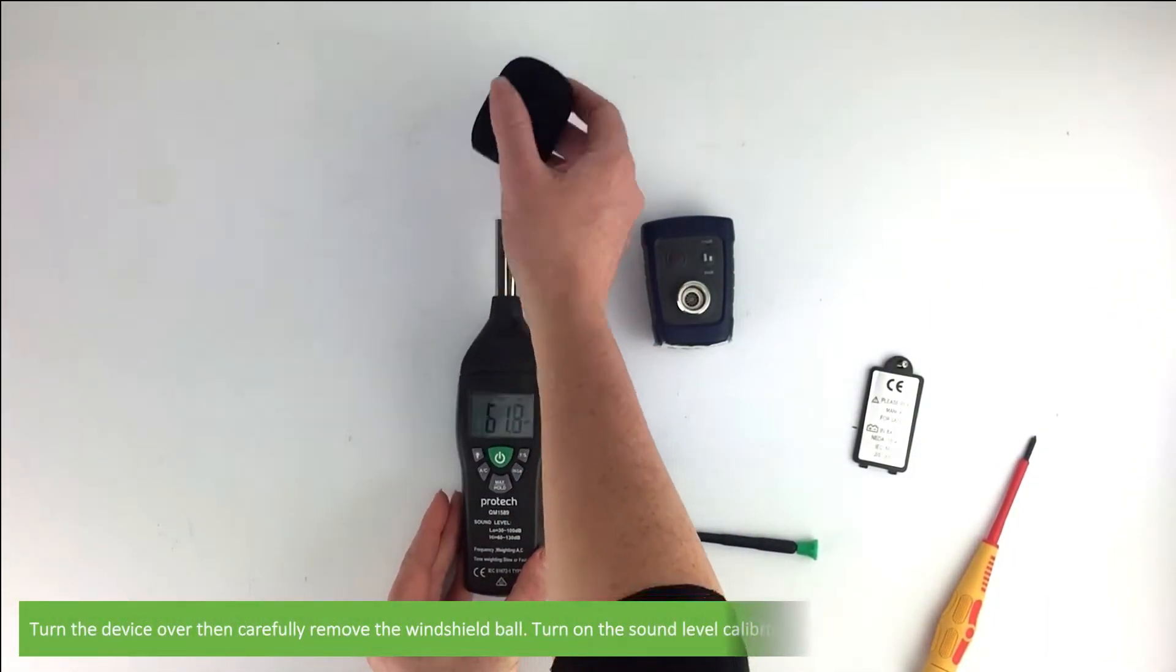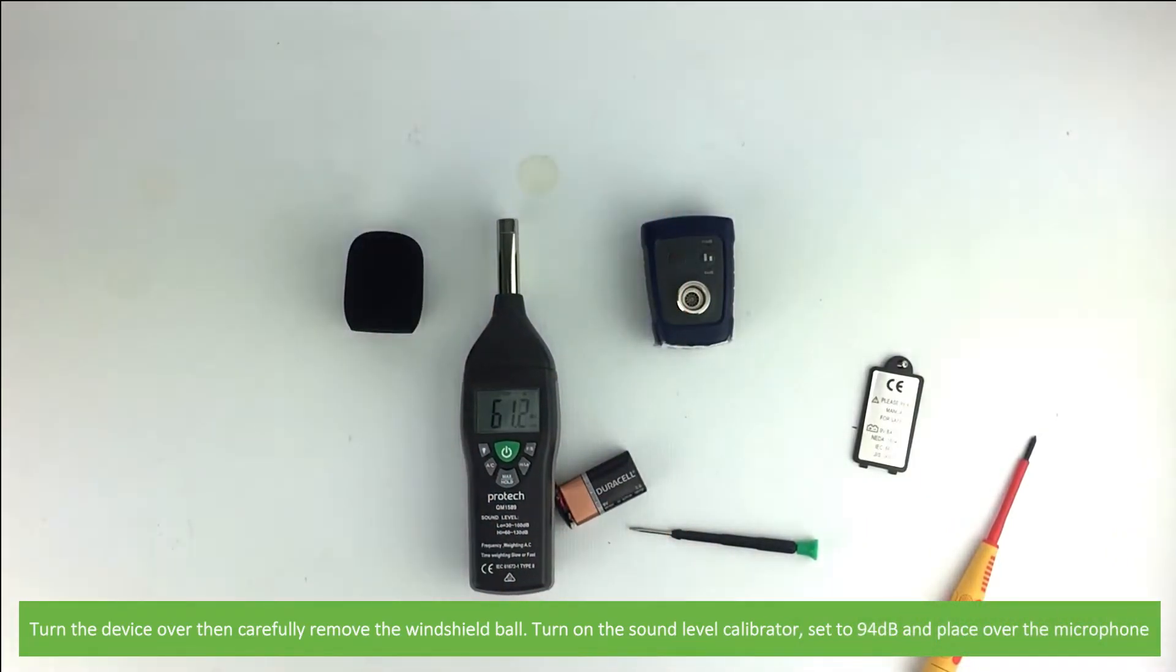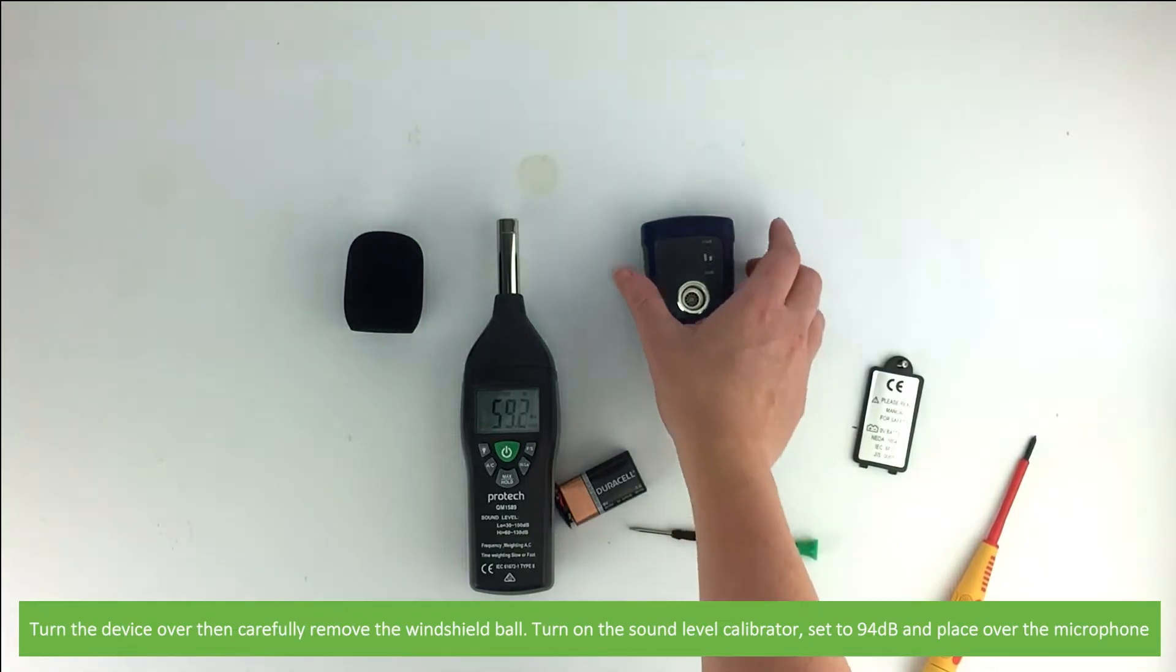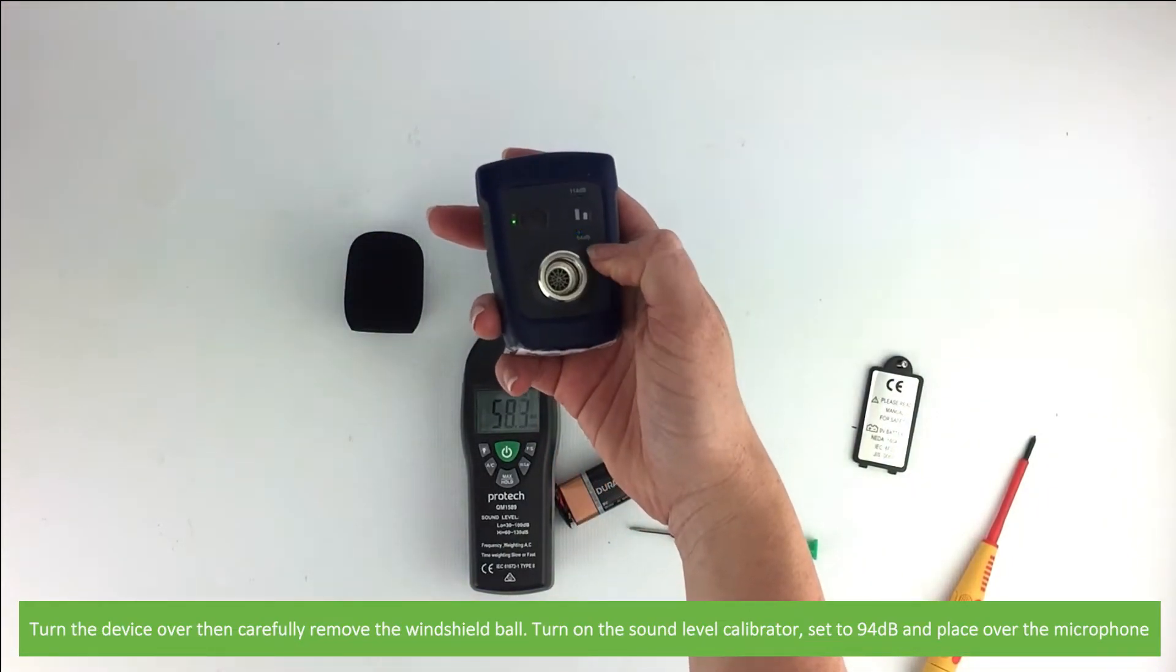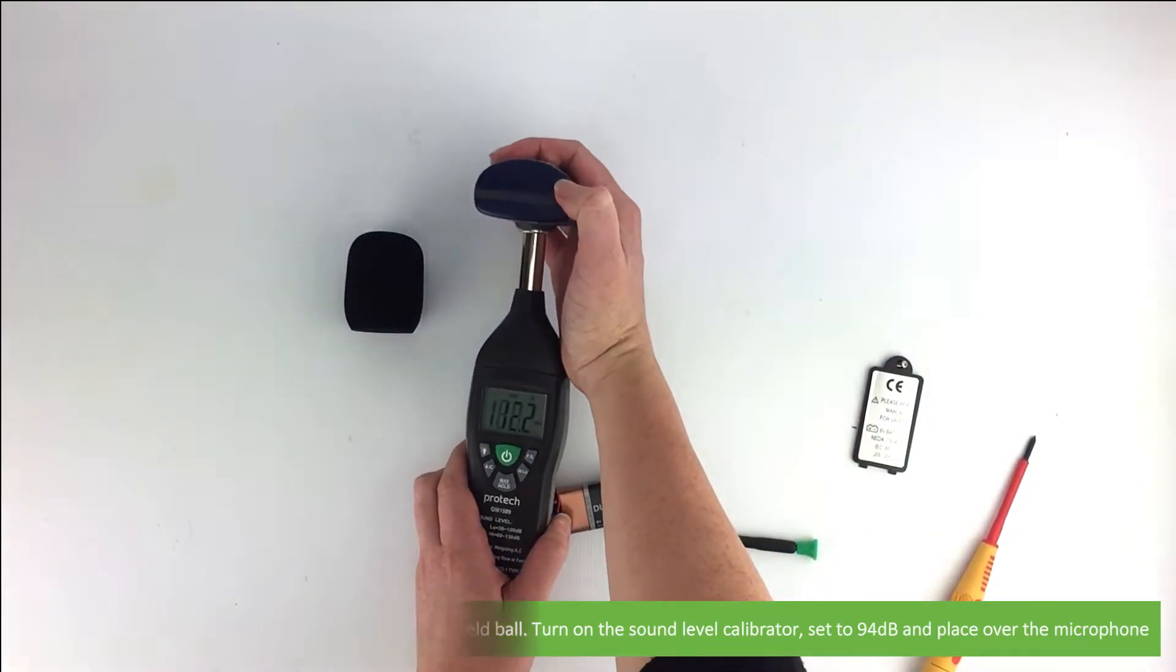Turn the device over and carefully remove the windshield ball. Turn on the sound level calibrator and set to 94 decibels. Then place over the microphone.